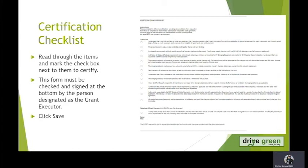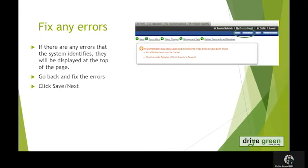This will bring you to the Certification Checklist. We need the grant executor to read through the items and mark the check box next to them to certify. This form must be checked and signed at the bottom by the person designated as the grant executor. In order to sign, the grant executor needs to click Save and this will effectively sign it. If any errors pop up, please go back and fix them and then click Save Next.